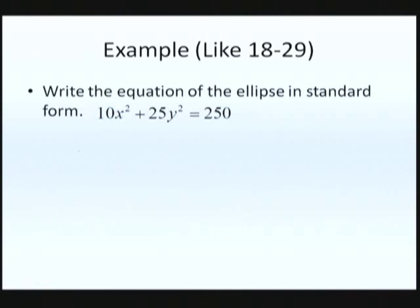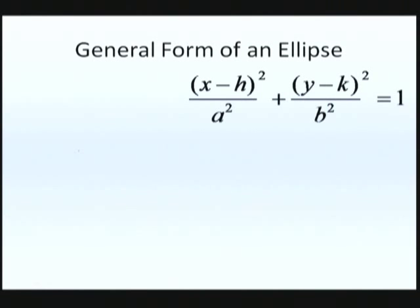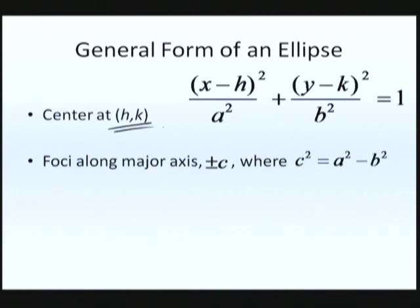And remember, the last thing that we did was we looked at the general form of an ellipse. So based off of that, we know that the center is at h,k, and we also know that there's the foci along the major axis, plus or minus c, where c squared is a squared minus b squared. So let's go ahead and take a look at this.